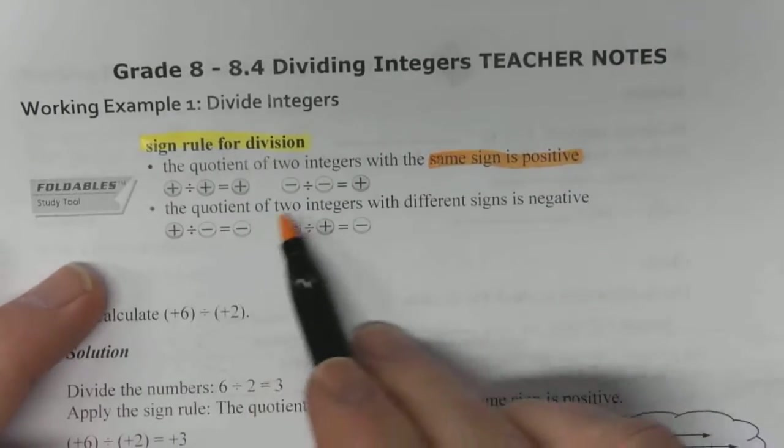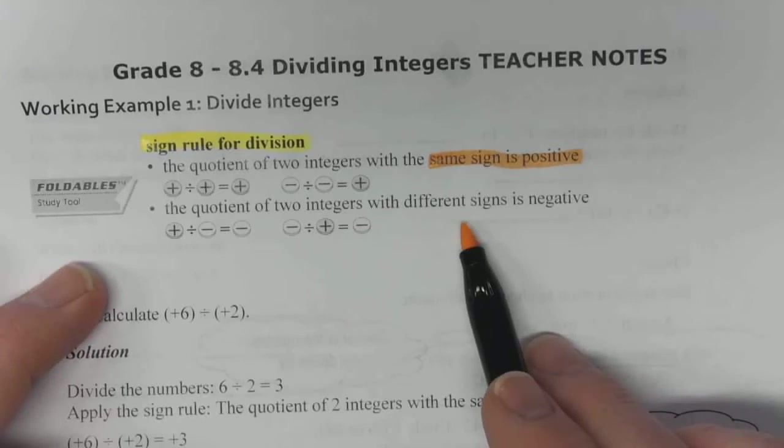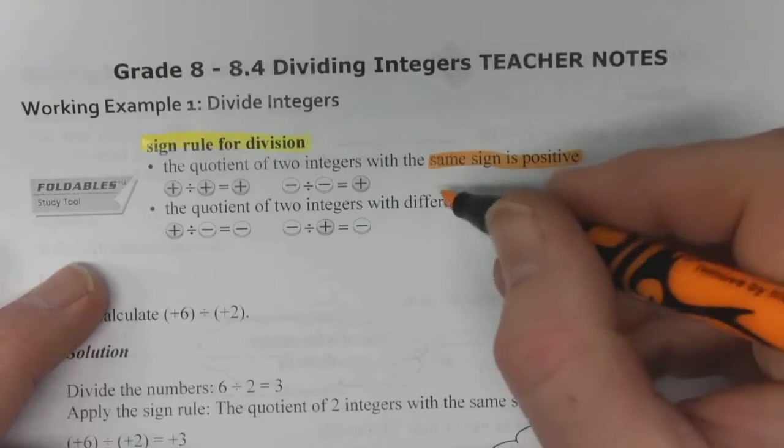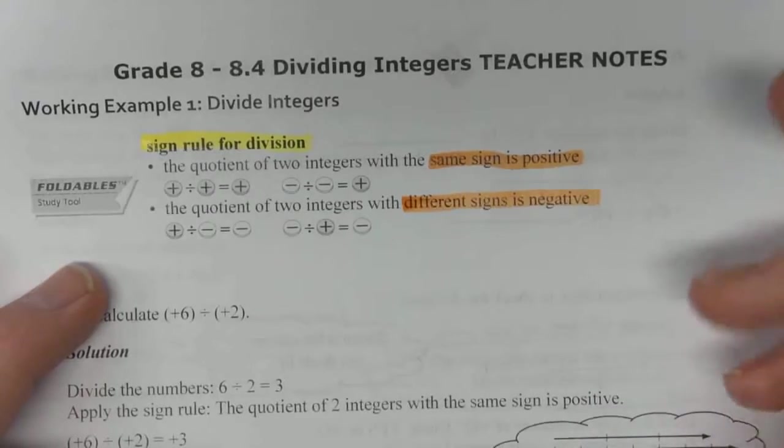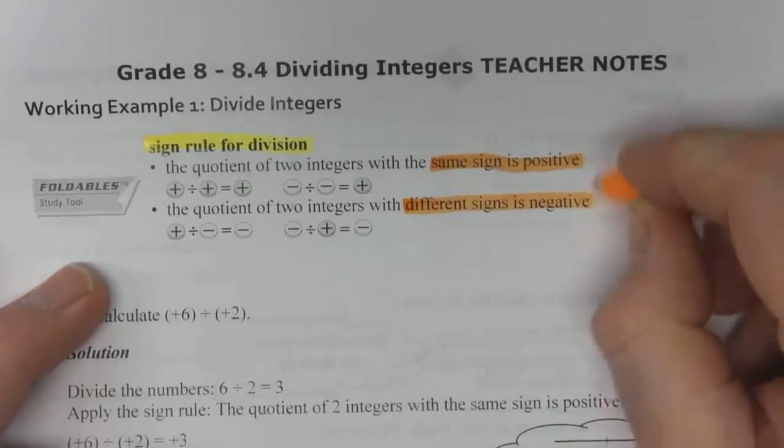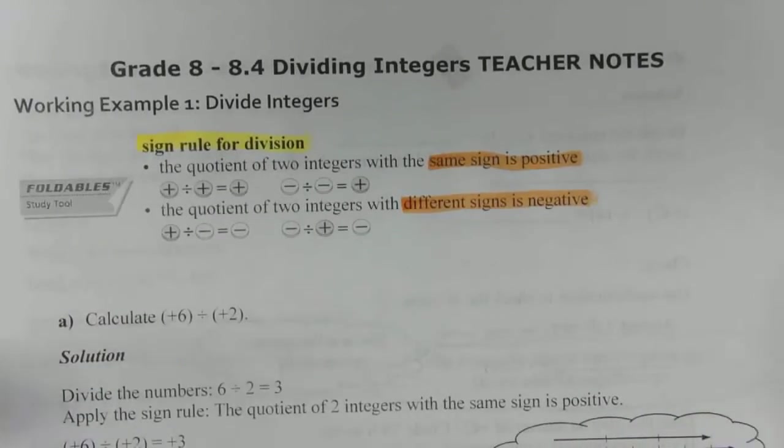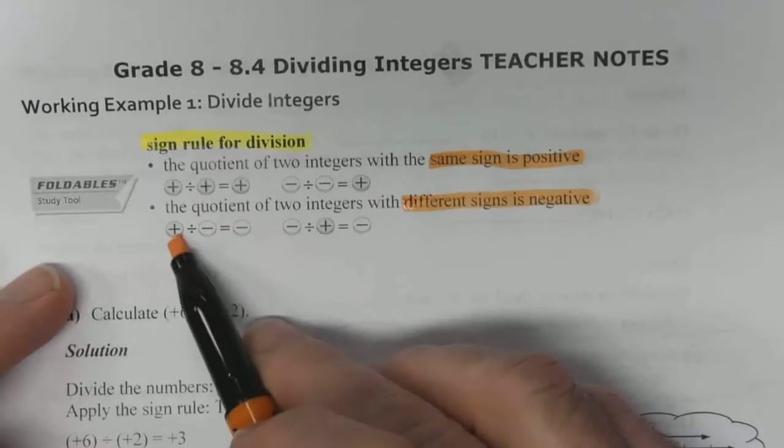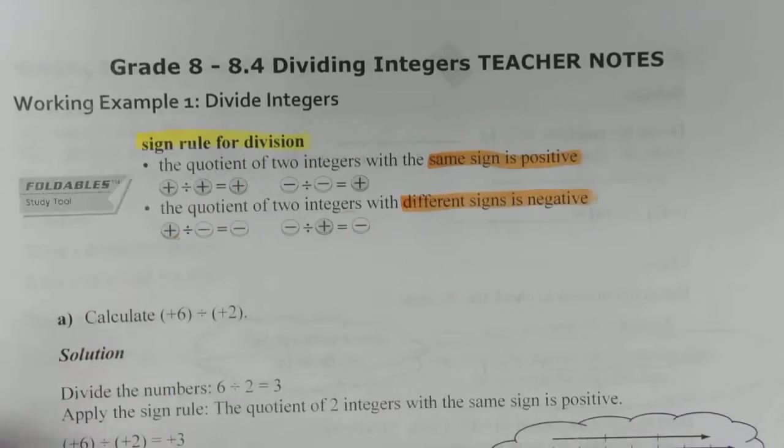And if the quotient of two integers with different signs, it means that your answer is negative. If the signs are the same, positive answer. If the signs are different, negative answer. Same concept.